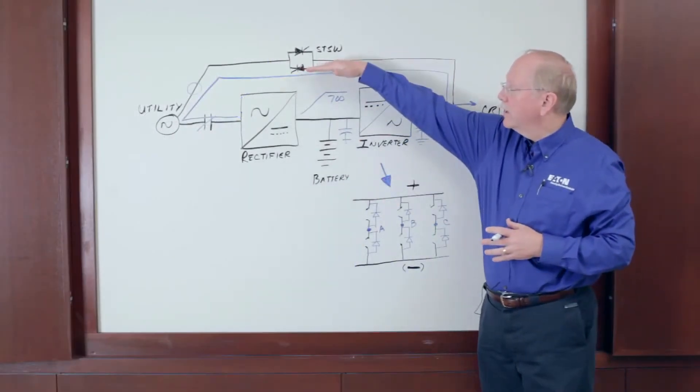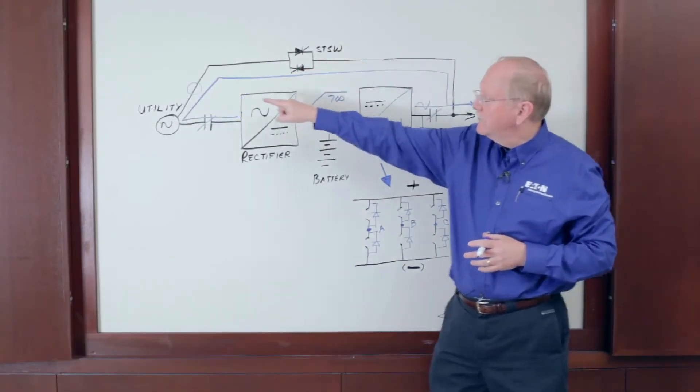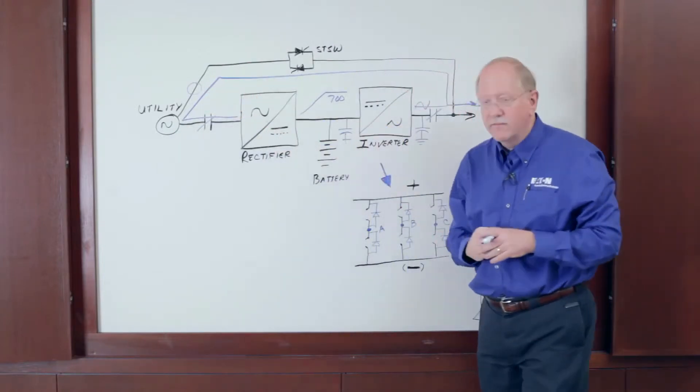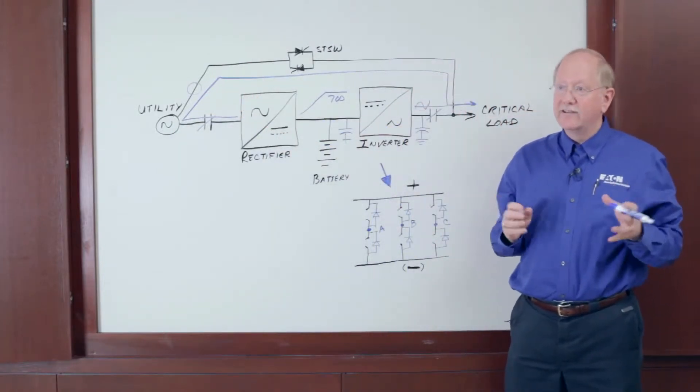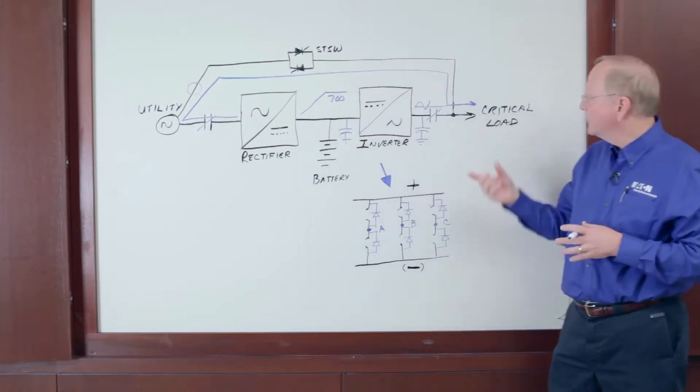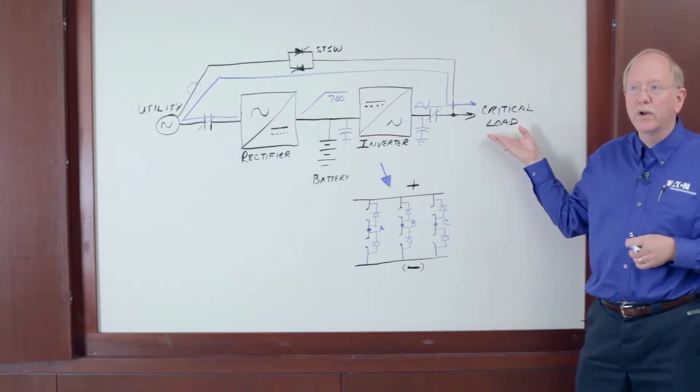So in eco mode, I'll have power through the static switch. If the incoming power becomes disturbed, I can flash on the rectifier and the inverter, and I can do that in as little as two milliseconds, including turning off the static switch. Is that fast enough for the critical devices that we're supporting here?